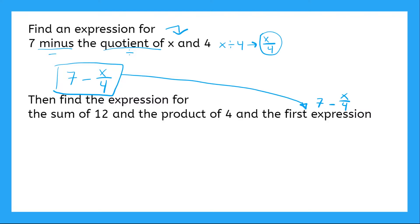So now we can start at the beginning for this one here. The sum, what does sum mean? Yeah, use that cheat sheet. It means plus. The sum of 12 and the product of, what is product of mean? Multiply, right? What am I multiplying? Four and my first expression. So I'm saying four times my first expression.